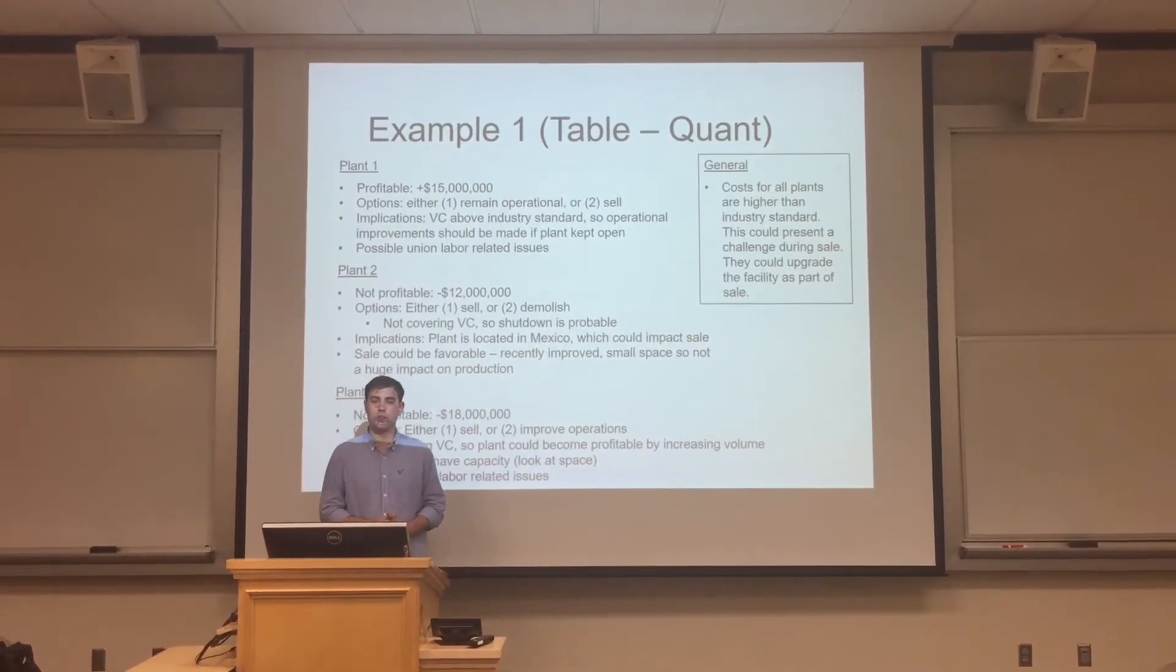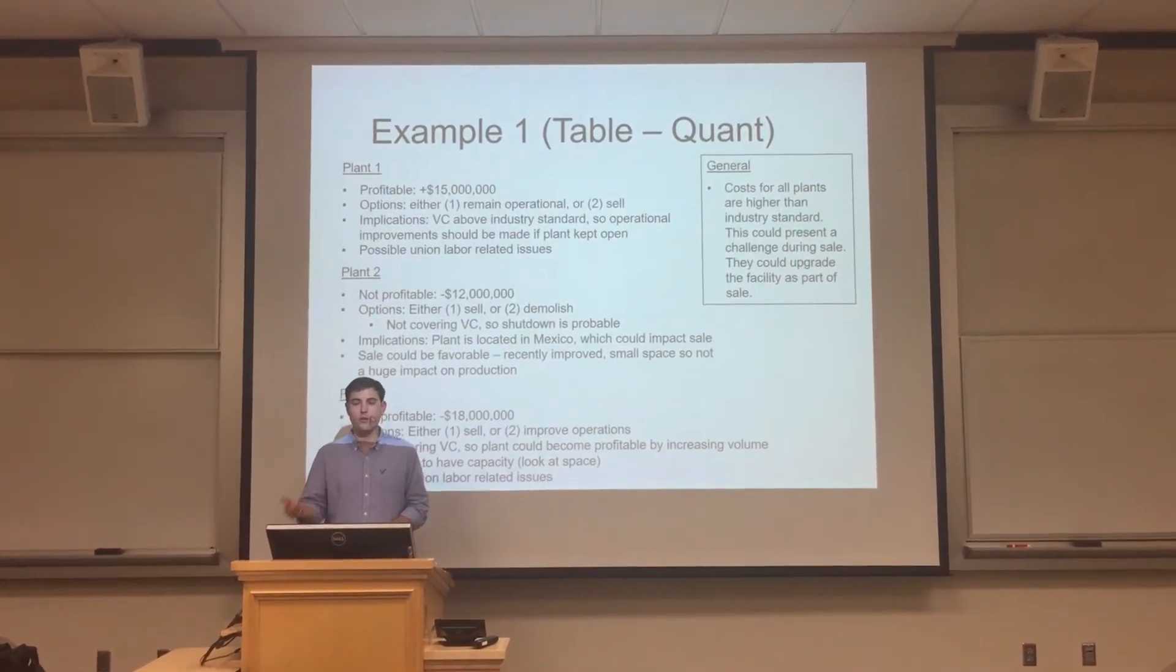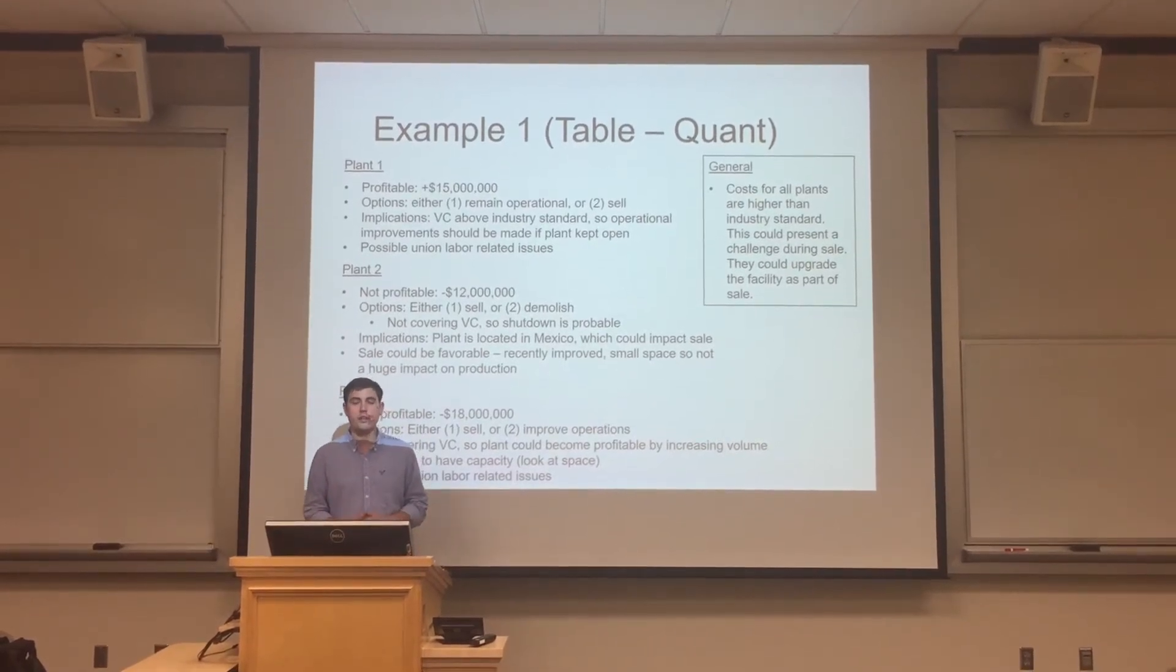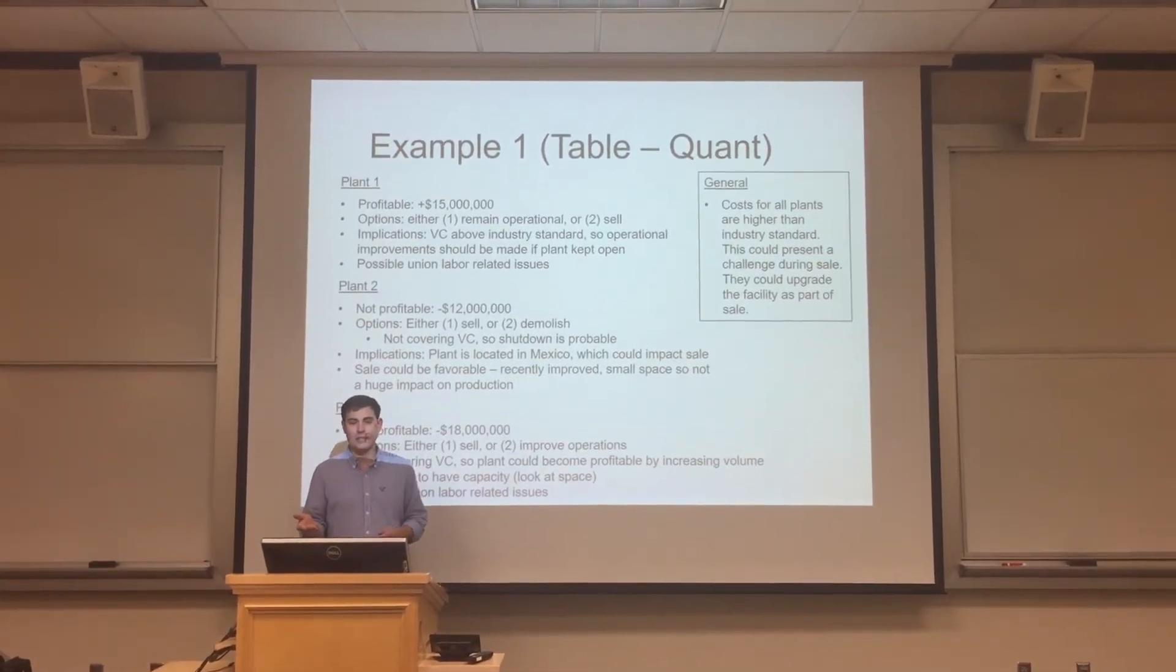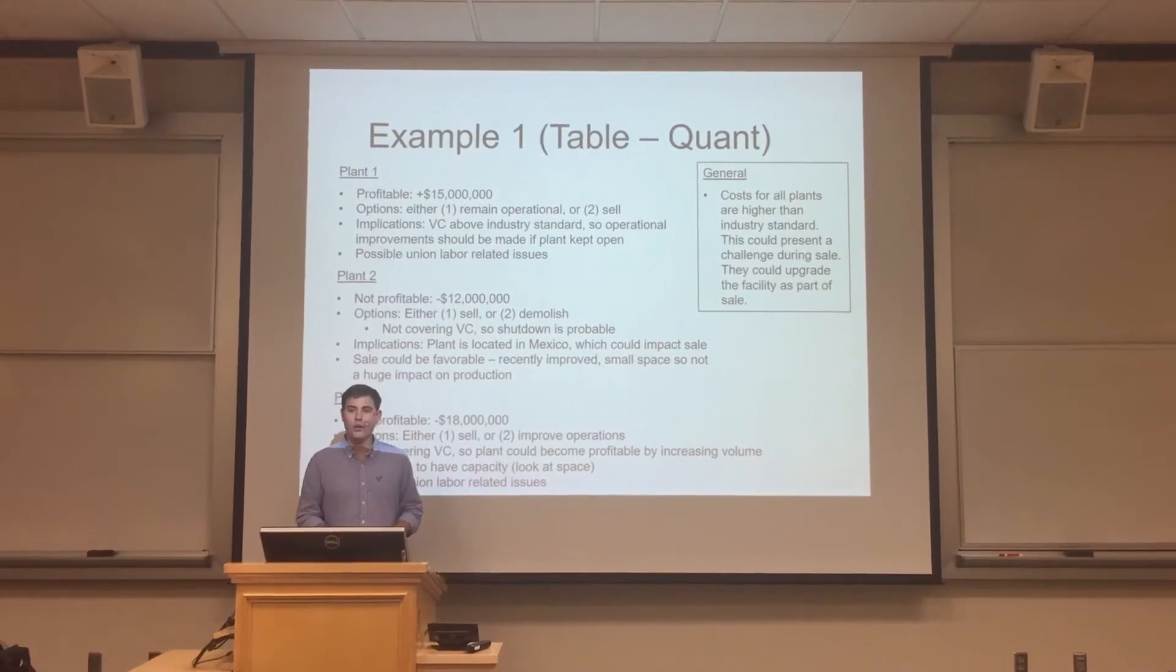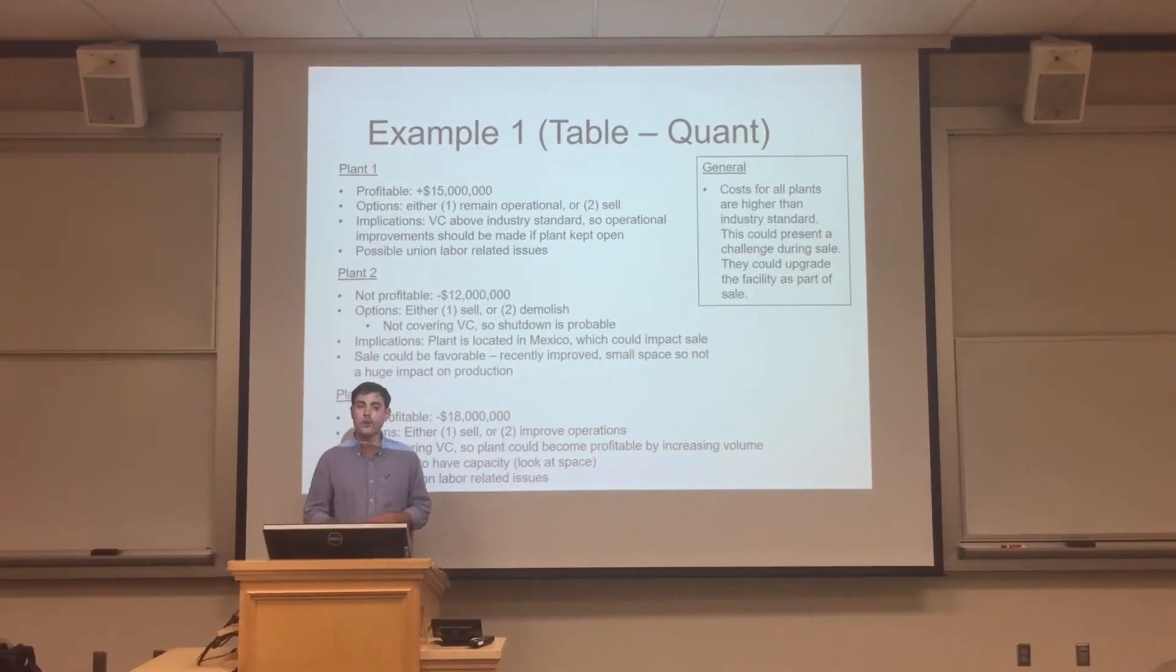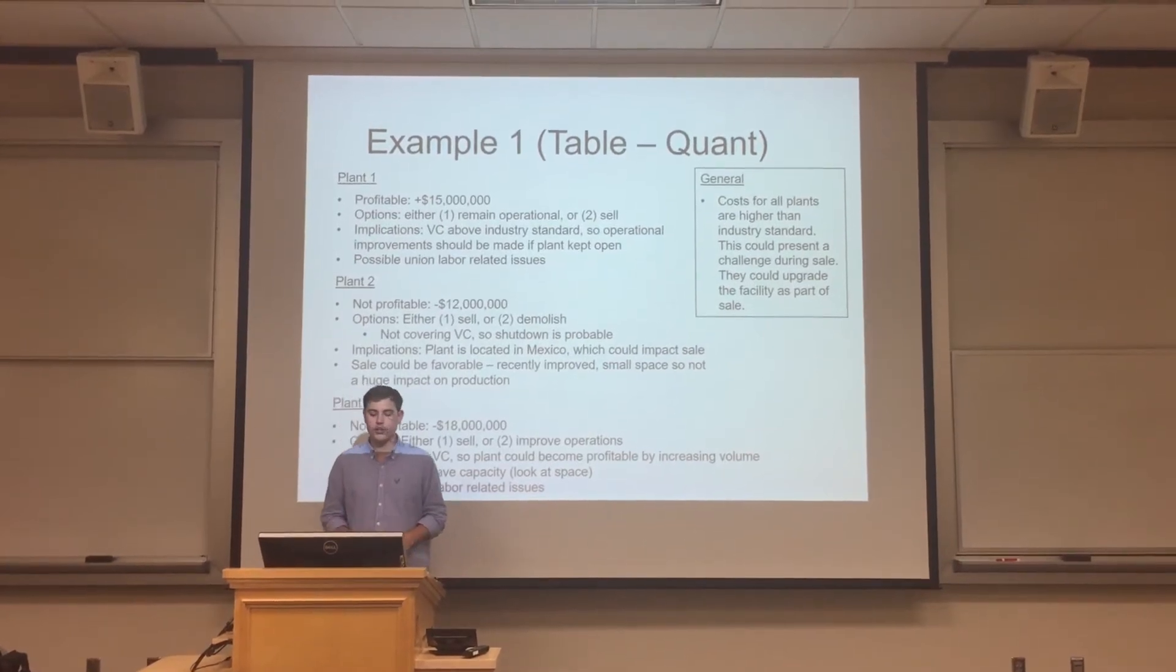Plant number three is not profitable either, losing $18 million a year, the most of any plant. The options for our client are to either sell the plant or to improve operations and to retain it. The key thing about plant three is that it's covering its variable costs. So the plant could quickly become profitable just by increasing volume. And they seem to have capacity since the plant has a lot of space, even though they're not producing that many finished goods. So I would want to know why is it that plant three is so large, but is producing so few finished goods, and how can we improve operations? It's important to note that plant three also has unionized labor, and so there could be other union labor-related issues.